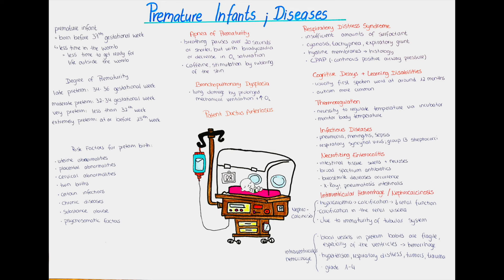A very serious complication that can arise is intraventricular hemorrhage. Blood vessels in the brain of small preterm babies are very fragile, especially those of the ventricles — areas in the brain where cerebrospinal fluid is made. A complication of some preterm babies can be a hemorrhage within the ventricles. It can be associated with concomitant high blood pressure, respiratory distress, tumors, or traumatic events, among many more. It is graded from 1 to 4 depending on the severity of bleeding.